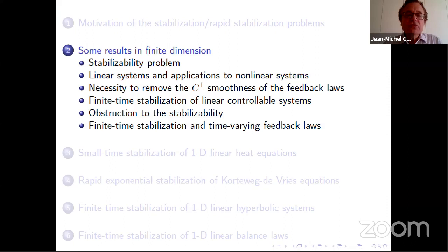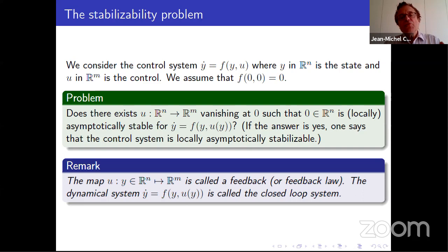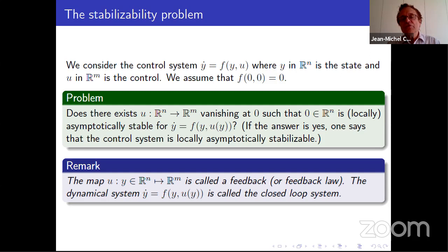Now we move to finite dimensional control systems. We have the control system which takes the form y-dot equals f of y and u. y is called the state and u is the control; y is in R^n and the control is in R^m. We assume that f(0,0) equals 0. You want to construct a feedback, which is a map from y giving u(y), such that u(0) equals 0, and such that for the closed loop system y-dot equals f(y, u(y)), the equilibrium 0 is asymptotically stable, locally at least.